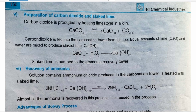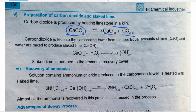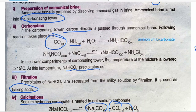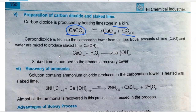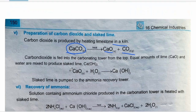The next step is the preparation of carbon dioxide and slaked lime. Carbon dioxide is produced by heating limestone, calcium carbonate, CaCO₃, in a kiln. This produces calcium oxide, CaO, and carbon dioxide. The carbon dioxide is fed into the carbonating tower for use in step two. Equal amounts of calcium oxide and water are then mixed to produce slaked lime, Ca(OH)₂.